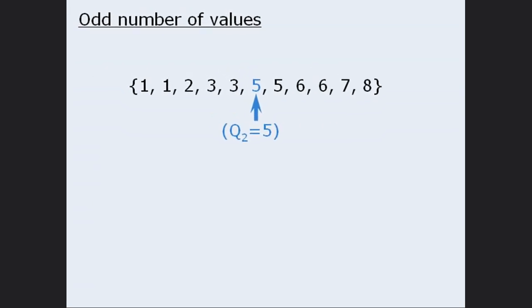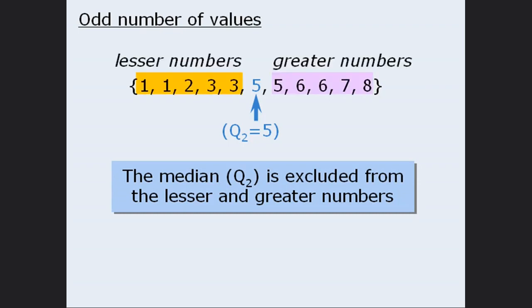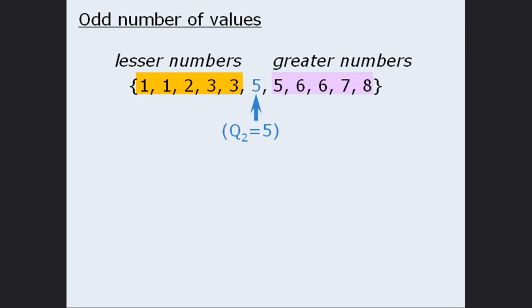At this point, we must divide our set into lesser and greater numbers. The question is: what do we do with the median? Do we include it in one of the two groups or not? For the purposes of this test, the rule is that we do not include the median in either of these groups. So here are the lesser numbers, and here are the greater numbers. We must find the median of the lesser numbers and the median of the greater numbers. The median of the lesser numbers gives us 2 as the first quartile, and the median of the greater numbers gives us 6 as the third quartile.